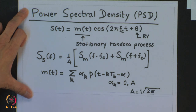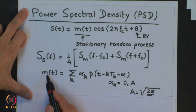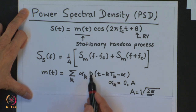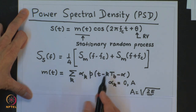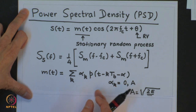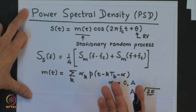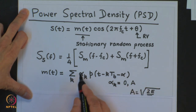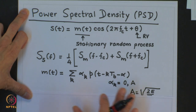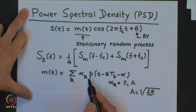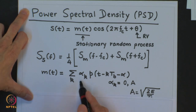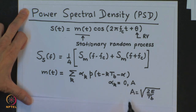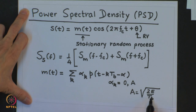In our case for binary ASK, M(T) is of a particular form. The pulse P can be anything, but in the diagram displayed the basic pulse was chosen to be rectangular; it could also be a raised cosine type. For our study we will restrict ourselves to rectangular pulses without loss of generality. Alpha_K can take 2 values: 0 and A, where A equals root(2E/T_B).